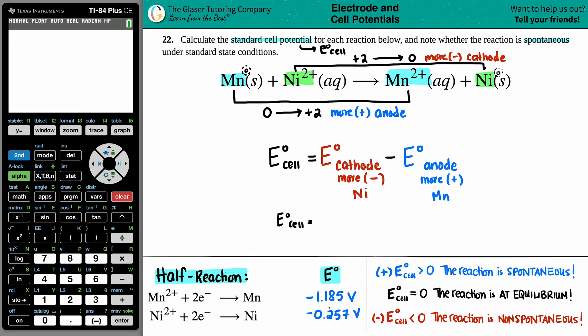So I'm just going to take the cathode value, which is the nickel one, and I'm going to say negative 0.257, and I'm going to subtract from the manganese. I'm not going to change the sign, so negative 1.185. And now let's see what that standard cell potential is for this reaction. Negative 0.257 minus a negative 1.185, and I get a 0.928, and that's volts. So there's my standard cell potential for this reaction.